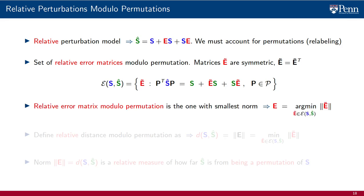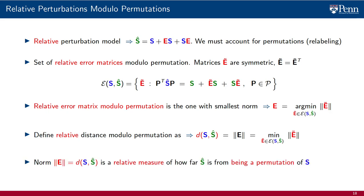Out of this set of candidate relative error matrices, we choose the one with the smallest norm. This is the one that we call relative error matrix modulo permutation. We use the norm of this matrix to define the relative distance modulo permutation between shift S and S hat, which is a relative measure of how far the shift operators S and S hat are from being permutations of each other.